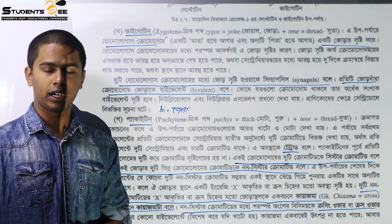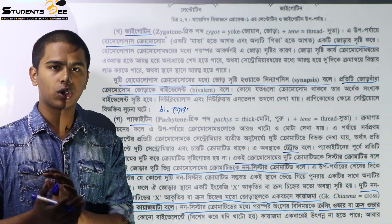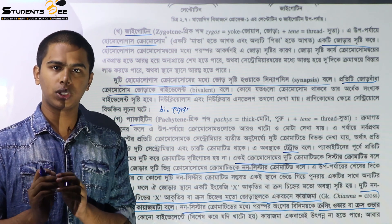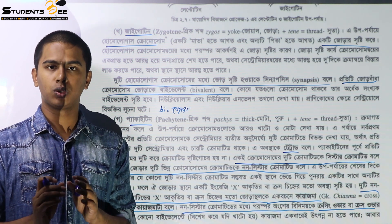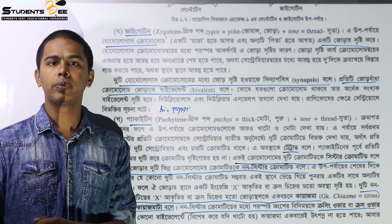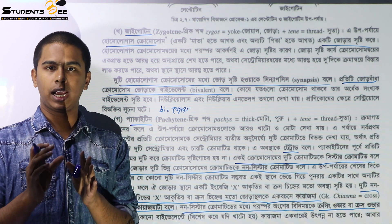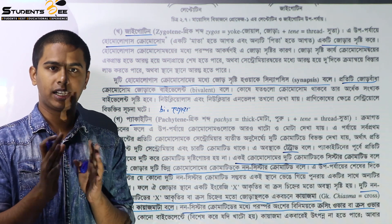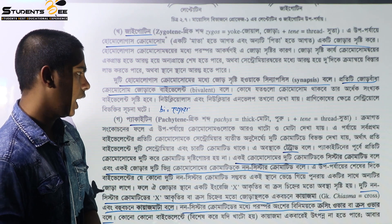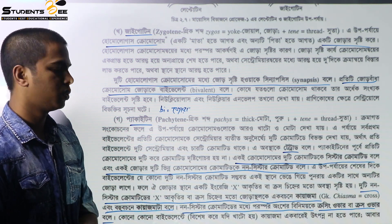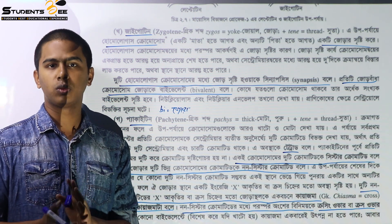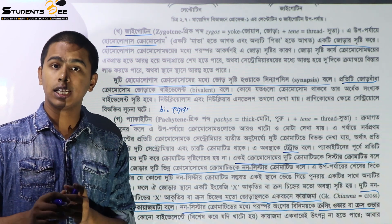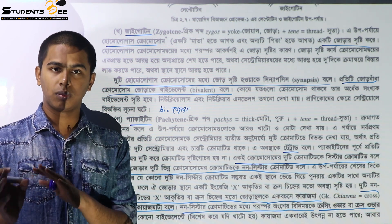The tetrad is a bivalent. The tetrad — it is the tetrad, which is a structure of four chromatids.